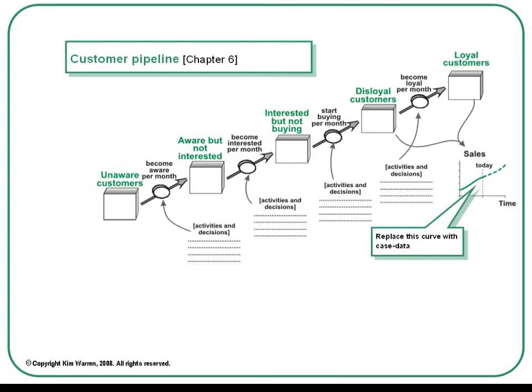A particularly powerful framework concerns the customer pipeline. This is one particular example of the principle that many resources develop through different stages. The boxes in this diagram contain the number of customers in each stage, and the activities and decisions that management take seek to move customers from the lower left to the upper right. Once again, you can start by replacing that curve on the right with the sales trajectory for the case you're discussing. You'll find information on this framework on pages 344 to 365 of the book and in video class segment 6.1.